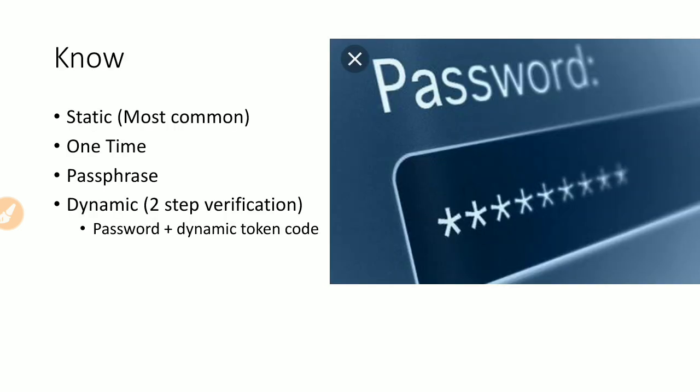Coming to the Type 1 authentication method — something you know — there are four types of passwords. The first is the static password, which is most common, used in web applications, and does not change or changes only after a long period. The second is a one-time password, used only once and cannot be reused. The third is a passphrase, which is a long sentence such as 'this is my password.' The fourth is a dynamic password, which requires a physical or software-based token code to authenticate — you combine your password with the token code, requiring two factors: something you know and something you have.